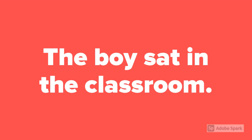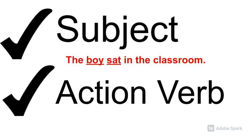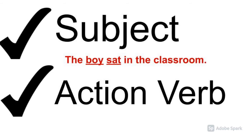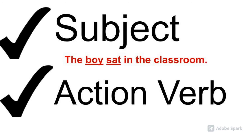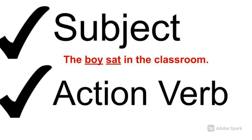These are hard, but let's try another one: 'The boy sat in the classroom.' Let's ask our questions. Is there a subject? Yes, the boy. Was there an action verb about the subject? Yes, he sat. It has both parts. This is a complete sentence.